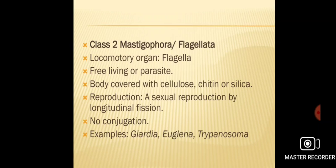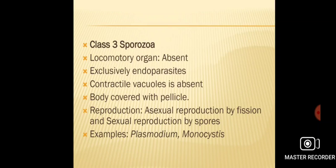In Mastigophora, asexual reproduction takes place by longitudinal fission. There is no conjugation seen. Examples of Mastigophora or flagellates are Giardia, Euglena, Trypanosoma, etc.